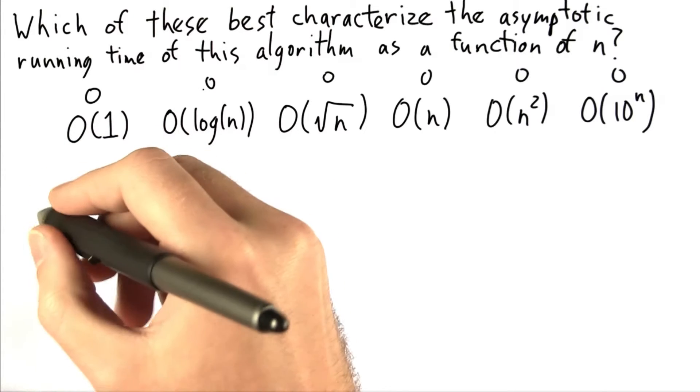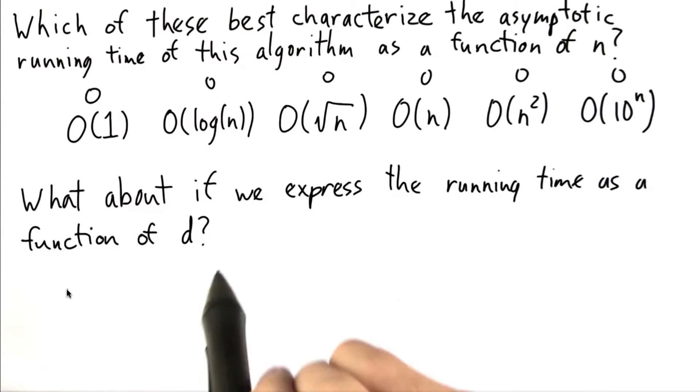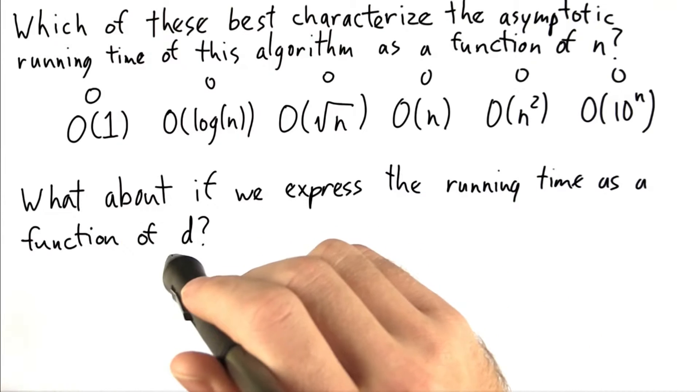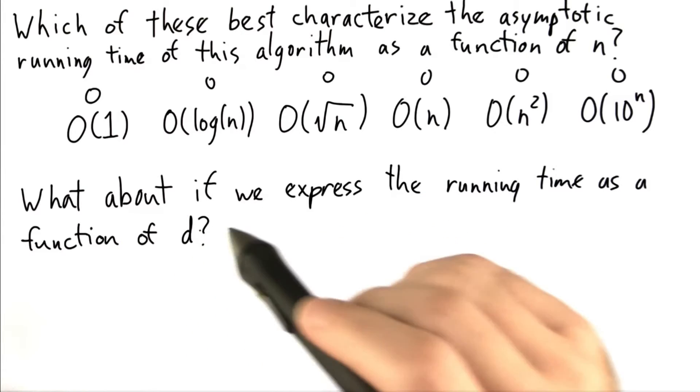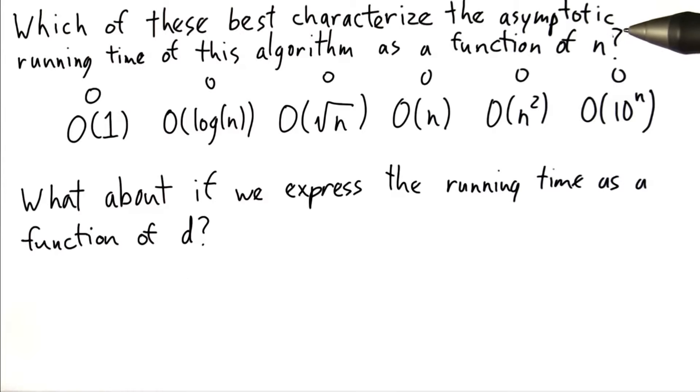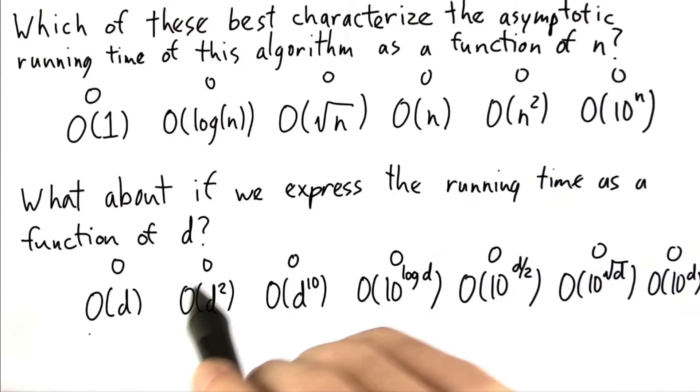And my second question is: what about if we express the running time as a function of d? The number of digits that it takes to represent the number, rather than as a function of n, the actual value of the number. If we express the running time in this way,